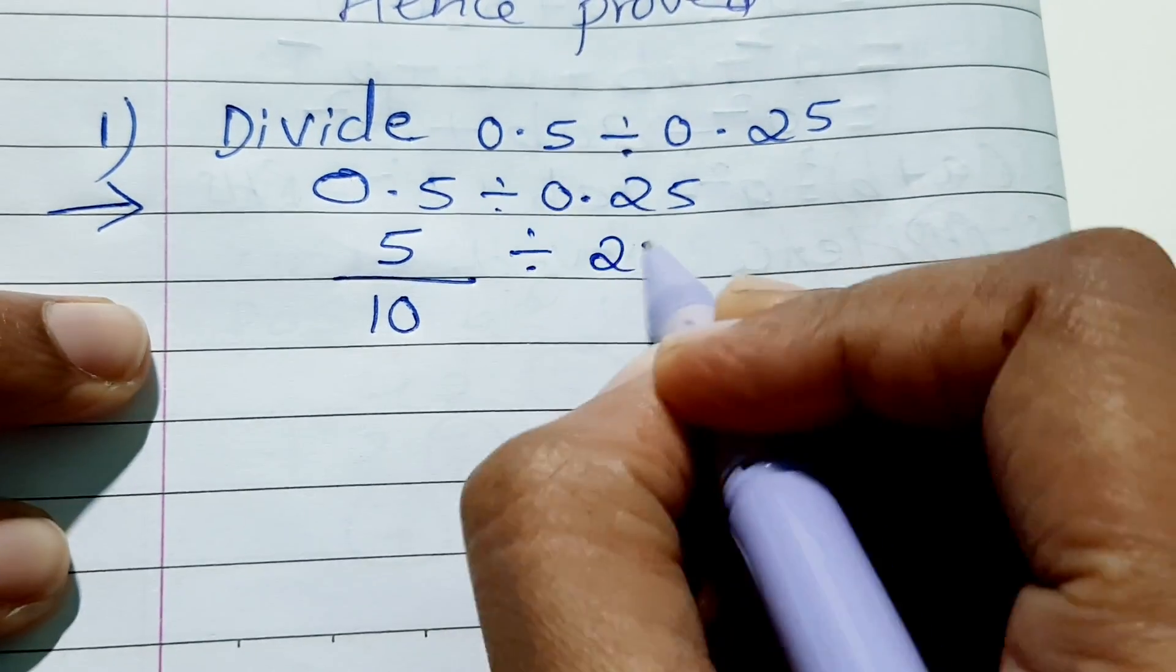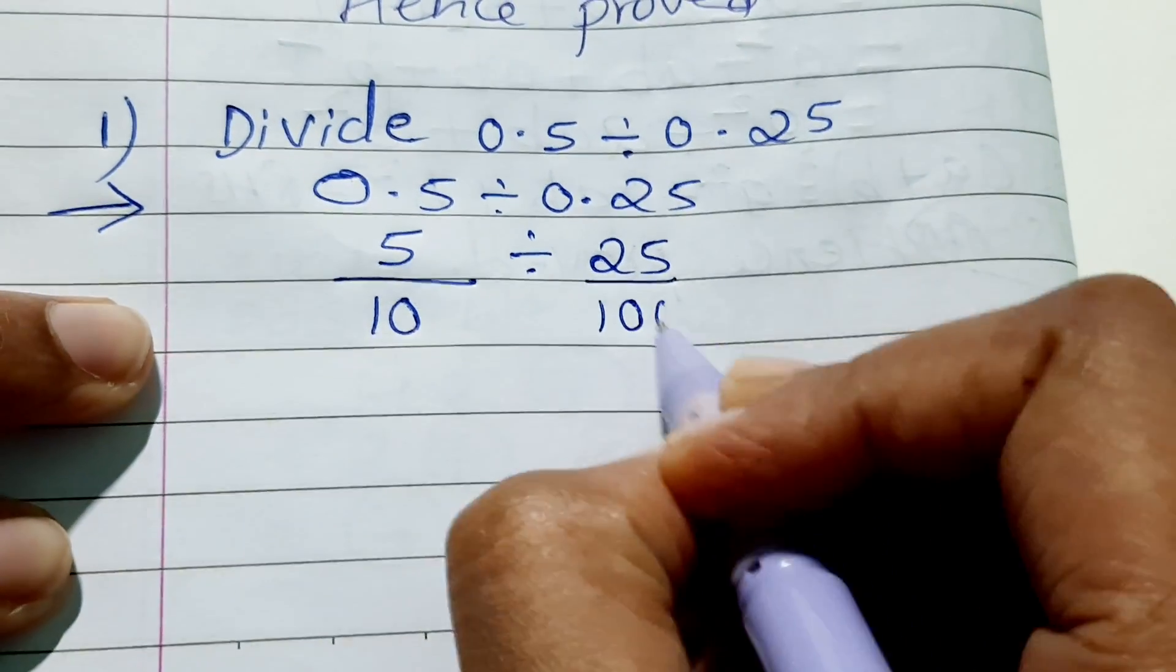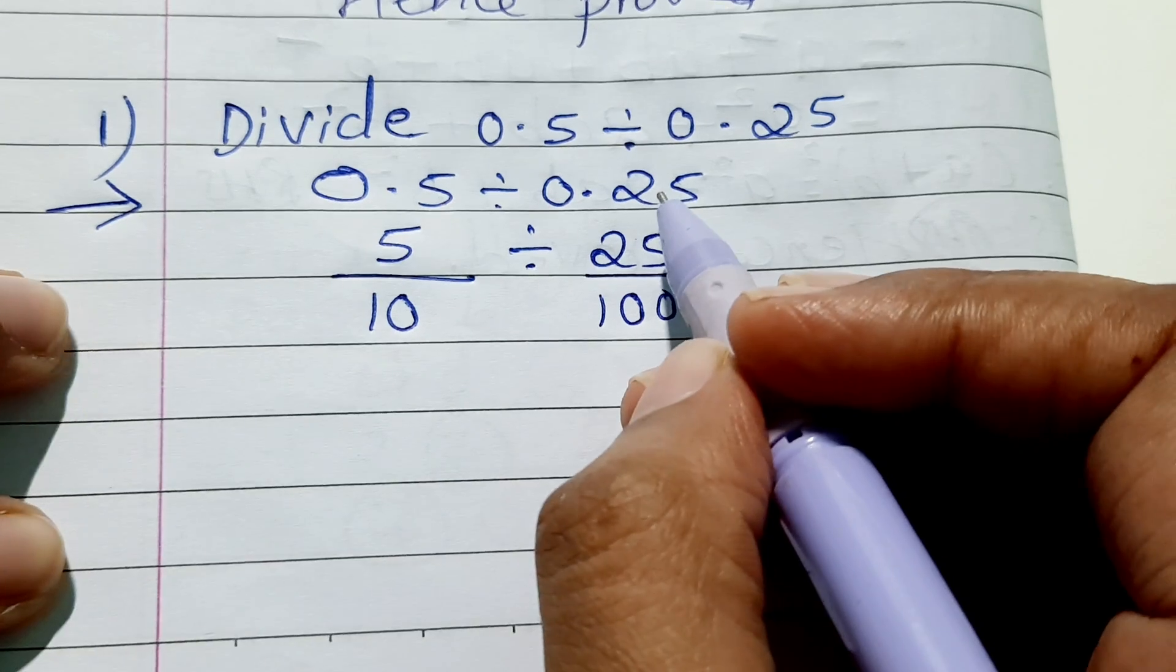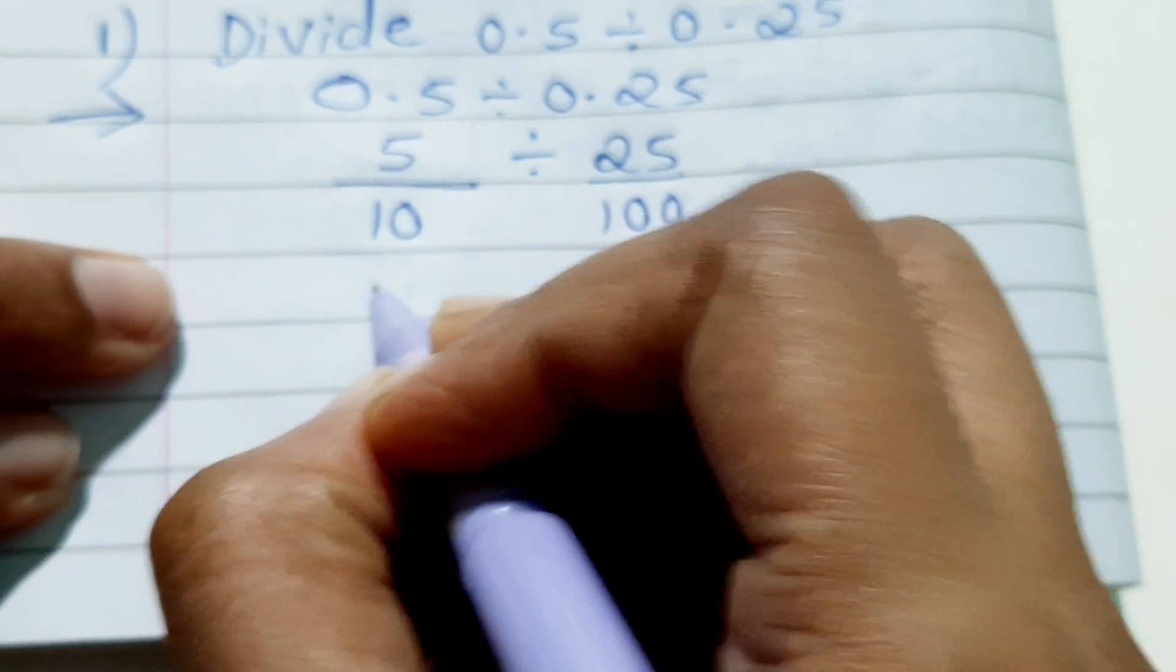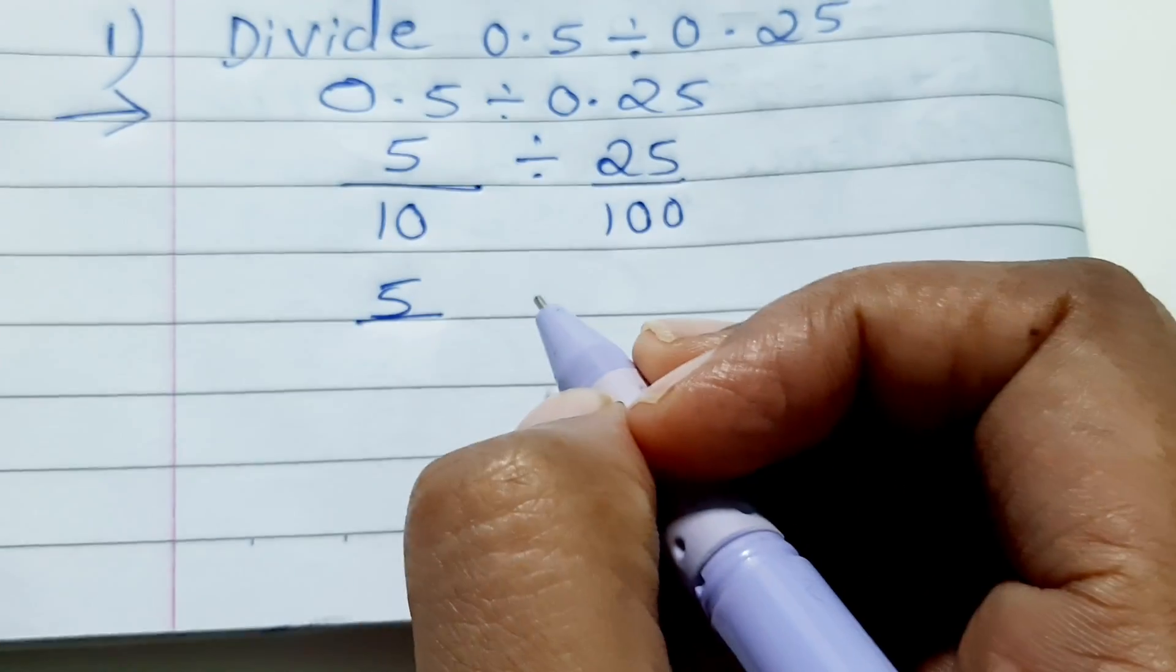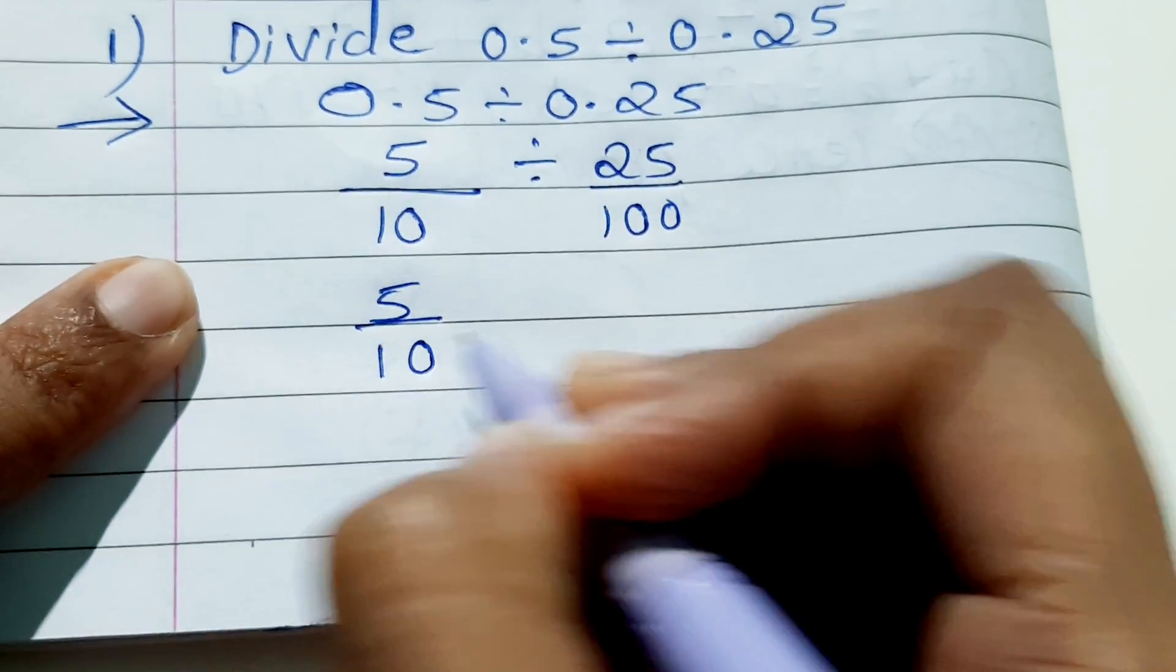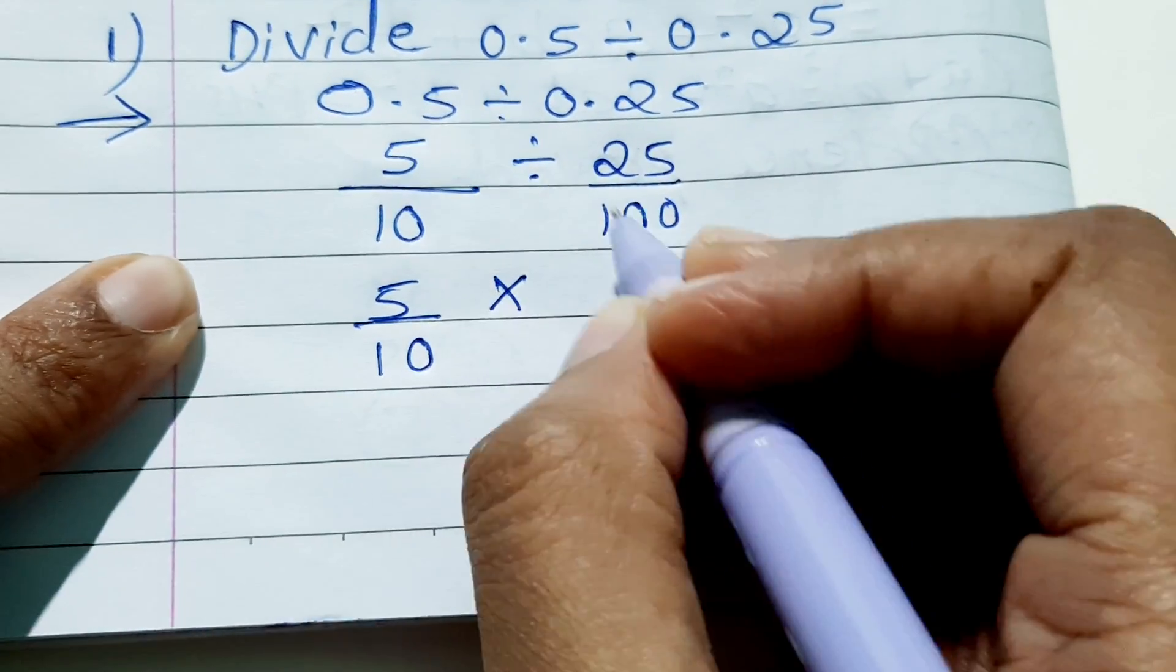Write down 25 upon 100. The position of the decimal point is second place, 1, 2, that's why it is 100. Then you'll have to put 5 upon 10, put a multiply sign, and then you have to take the reciprocal.